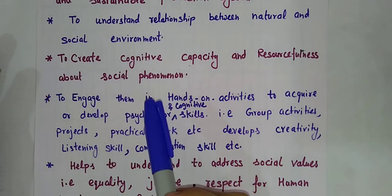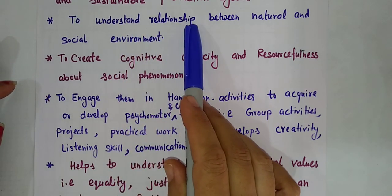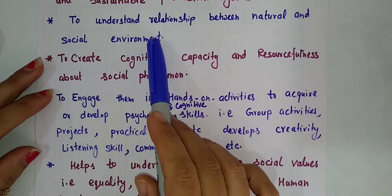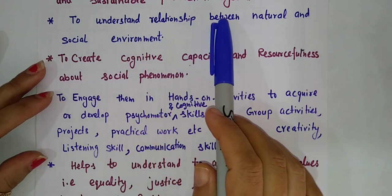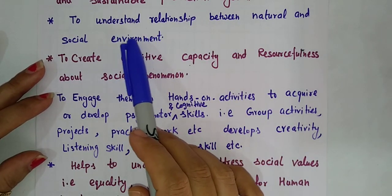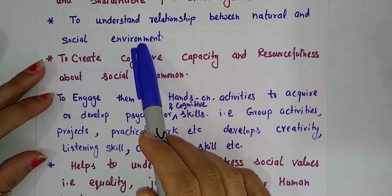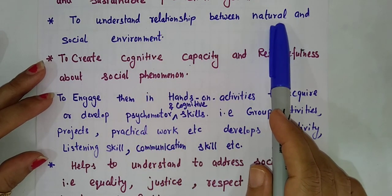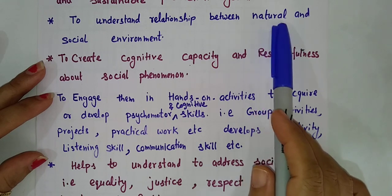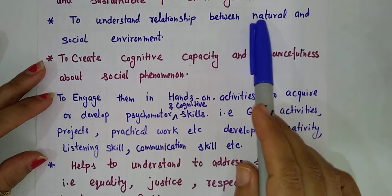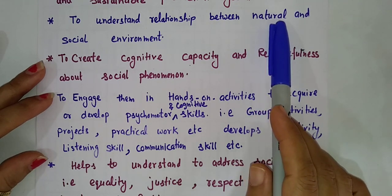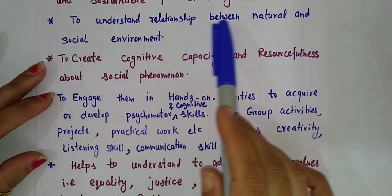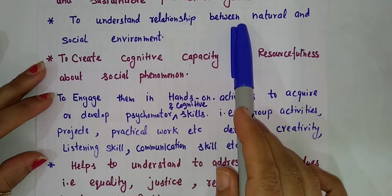The next point is to understand the relationship between the natural and social environment. What is the relationship in our natural and social environment? In the last video, I had clarified the concept of kinds of environment — kinds of EVS — where I mentioned about the physical and natural environment, and social environment. There are three types of environment that we discussed in the last video.